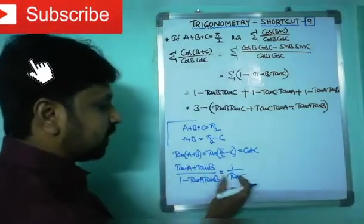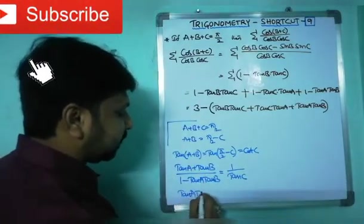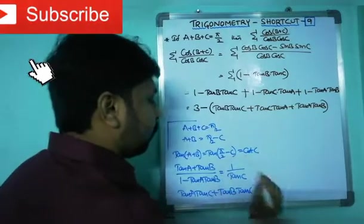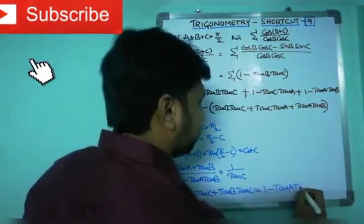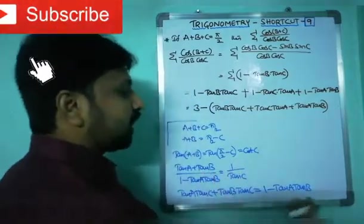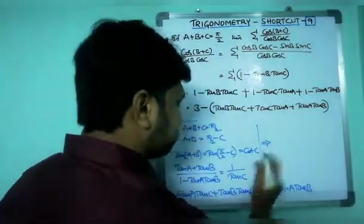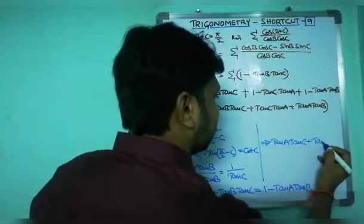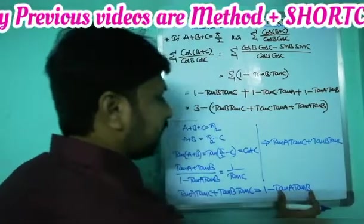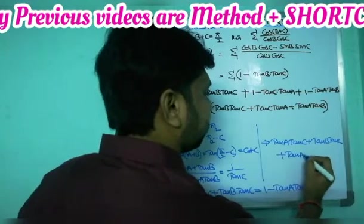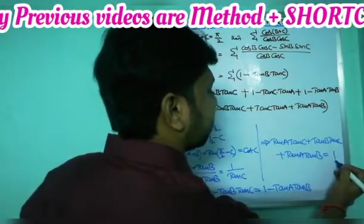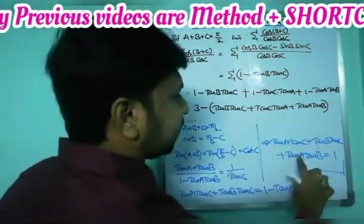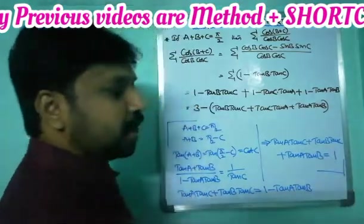Applying cross multiplication: tan c multiplied gives tan a · tan c + tan b · tan c = 1 minus tan a · tan b. Rearranging, this implies tan a · tan c + tan b · tan c + tan a · tan b = 1. So the value of tan b · tan c + tan c · tan a + tan a · tan b is equal to 1.